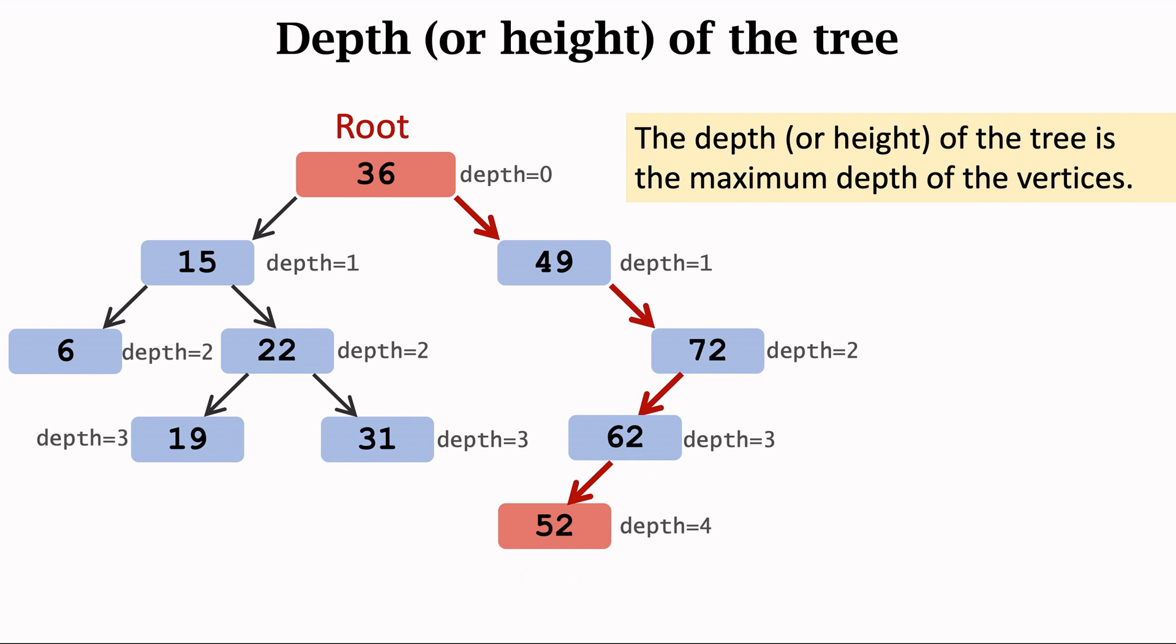This vertex has a depth of four. Starting from the root, we need to move four steps to reach this vertex. Among all the vertices, this vertex has a maximum depth. The maximum depth of the vertices is four, so the tree has a depth of four.